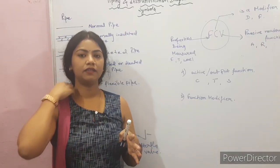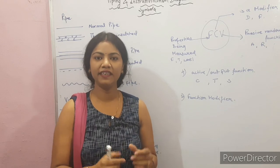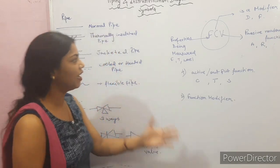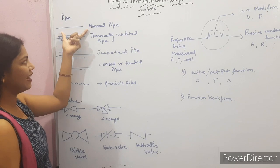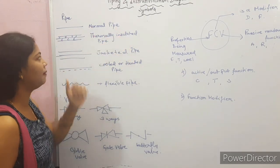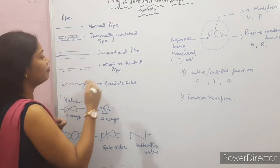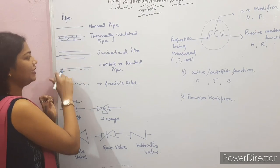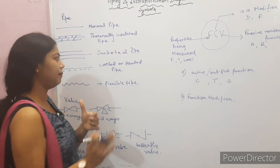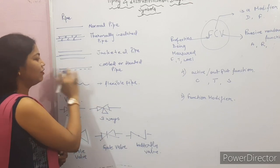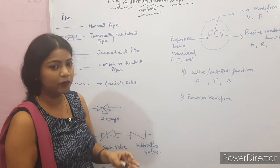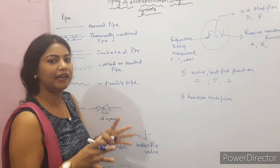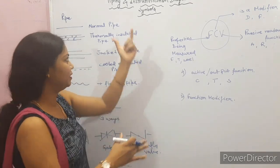Now let's talk about pipe types. A solid line means a normal pipe. A certain representation means a thermally insulated pipe. Triple lines represent a jacketed pipe. And one solid line with one dotted line represents a cooled or heated pipe.